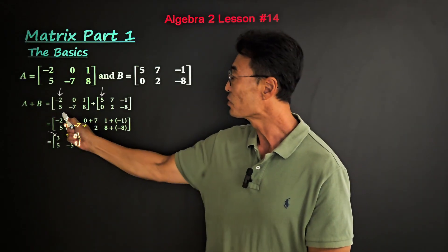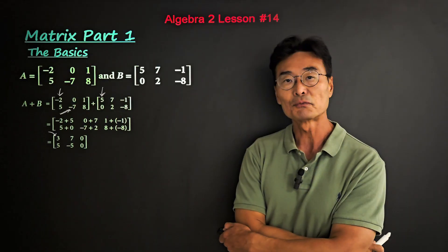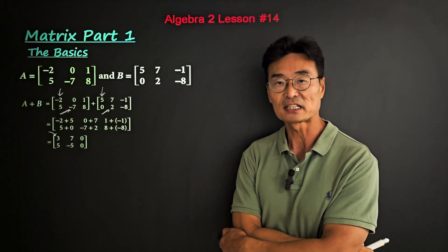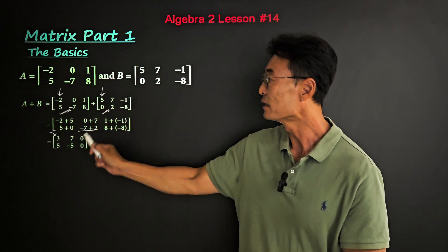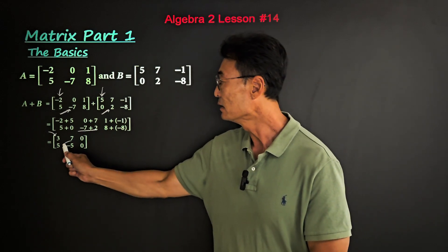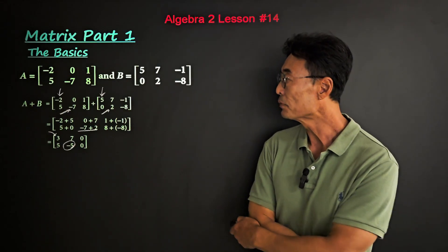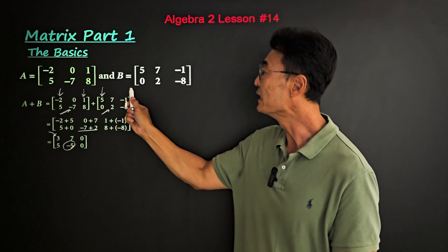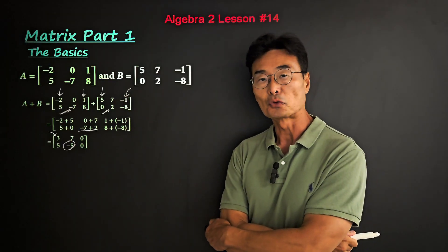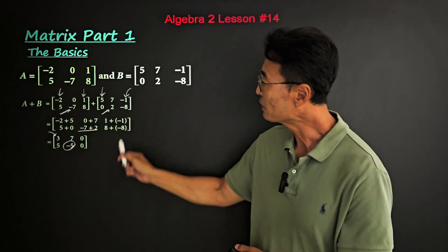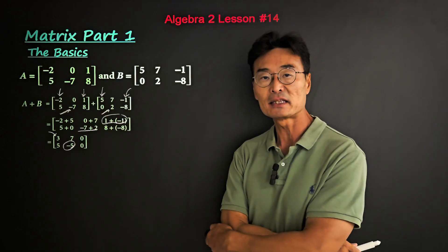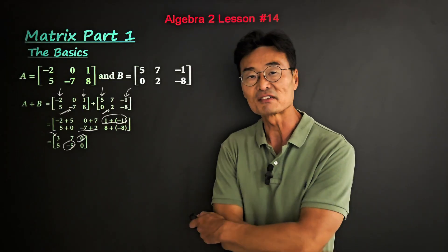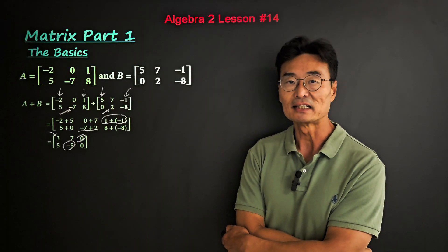Let's take another example. Notice that negative 7 is in the second row, second column, and 2 is in the second row, second column. Therefore, we're going to add negative 7 and 2 and get negative 5. One more example: here we have a 1 in the first row, third column, and negative 1 in the first row, third column, where we add 1 and negative 1 and end up with 0. Therefore, this is going to be the sum of matrices A and B.